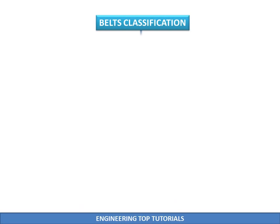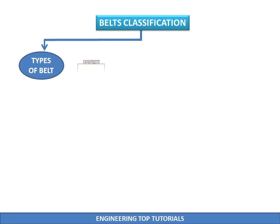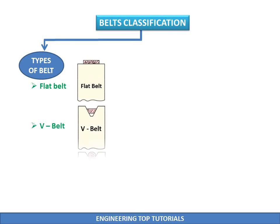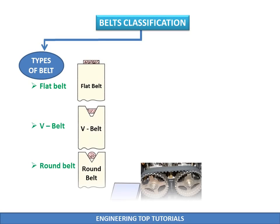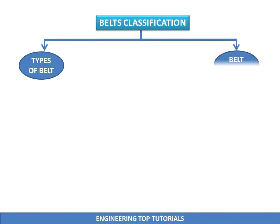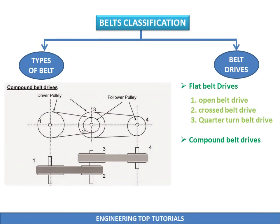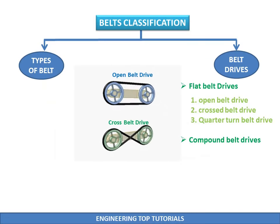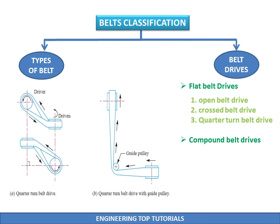Belts are classified into many types according to their usage, position, and shapes — such as flat belts, V belts, round belts, and timing or tooth belts. Belt drives are classified as flat belt drives and compound belt drives. The flat belt drives are further classified as open belt drive, crossed belt drive, and quarter turn belt drive.